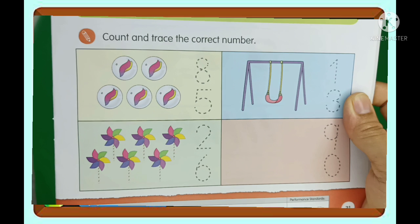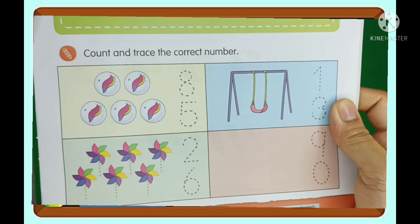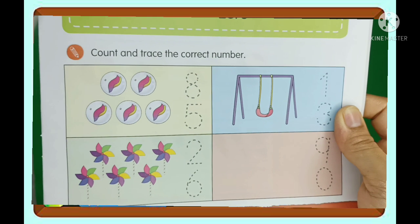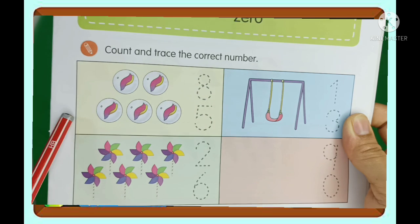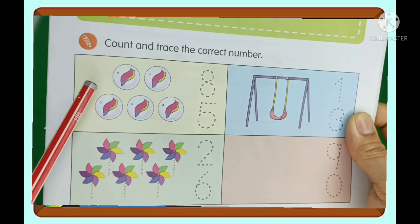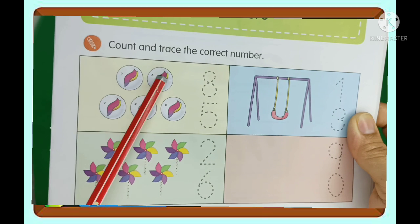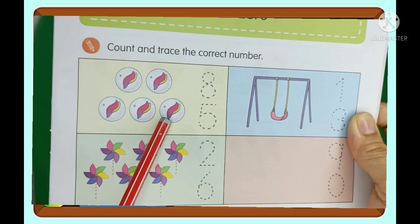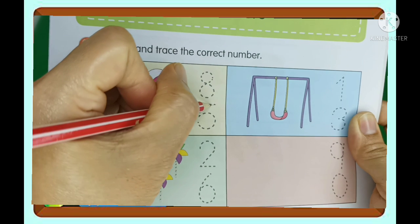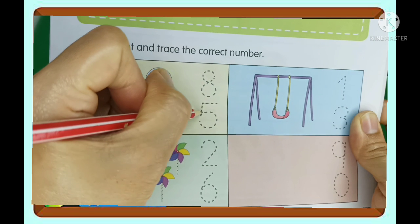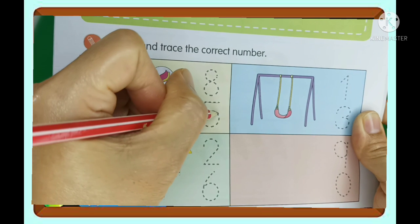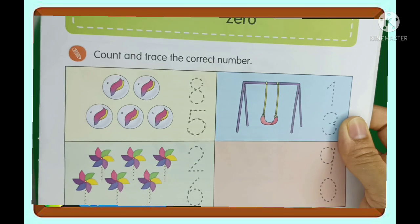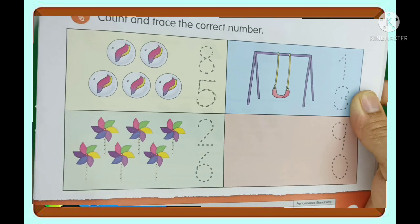All right, down here in our book we are going to count and trace the correct number. So here, let's count the marbles: one, two, three, four, five. So we are going to write number five here. I know you don't have this book, but just for the teaching, Teacher Lynn will show you this one.